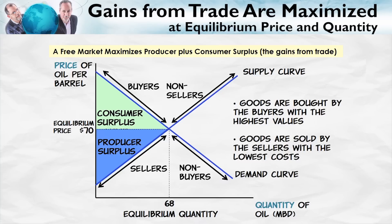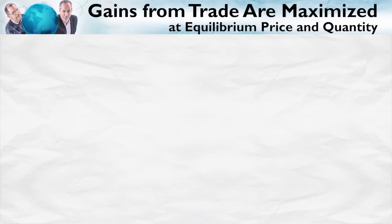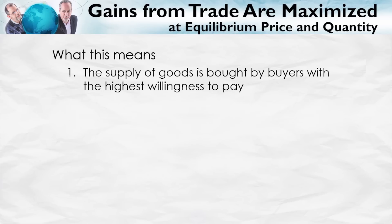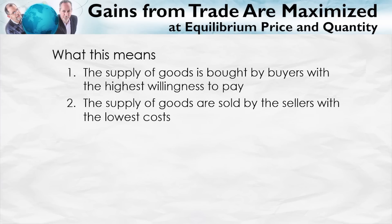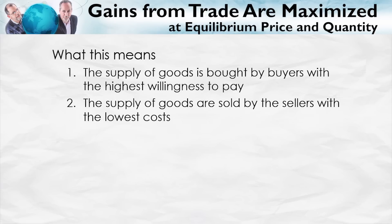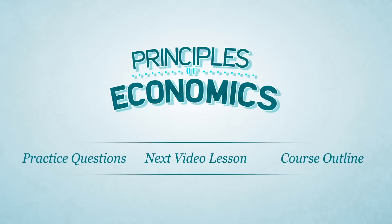Let's summarize. A free market maximizes the gains from trade — the gains from trade are maximized at the equilibrium price and quantity. The supply of goods is bought by the buyers with the highest willingness to pay, and sold by the suppliers with the lowest costs. Between the buyers and the sellers, there are no unexploited gains from trade and no wasteful trades. That concludes our review — on to some new material. If you want to test yourself, click practice questions. Or if you're ready to move on, click next video.